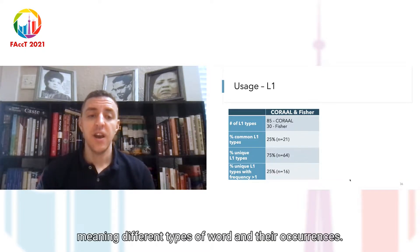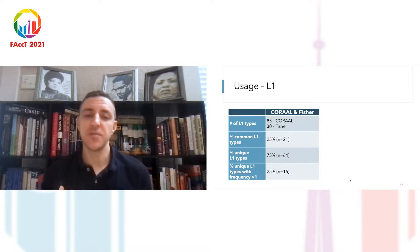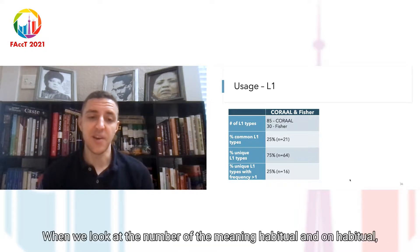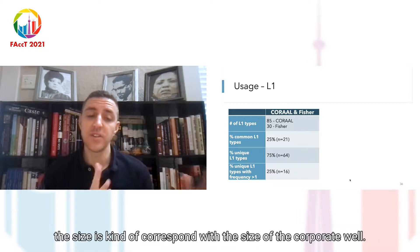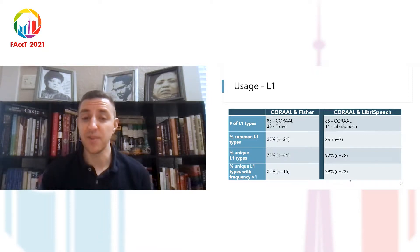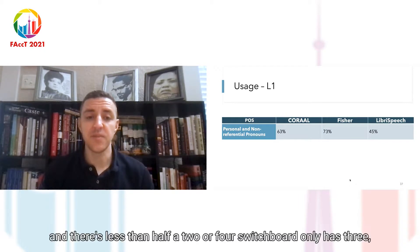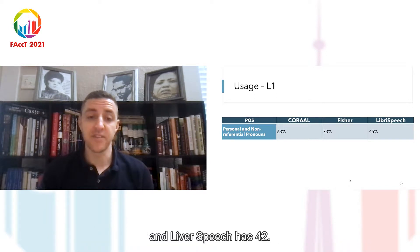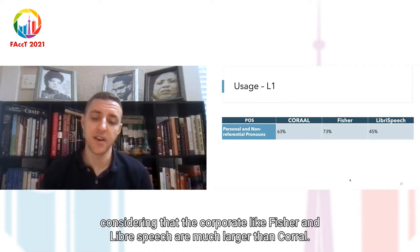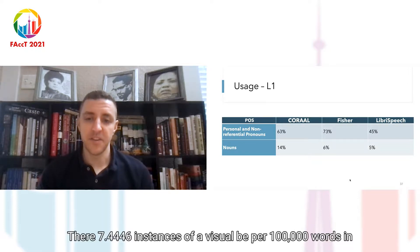Finally, for usage — in terms of L1 for CORAAL and Fisher, the number of L1 types for CORAAL was much higher than Fisher. Word types just means the unique word instances. The number of common L1 types between the two corpora was only 25%, meaning that only 25% of the words one to the left of B in CORAAL appear in Fisher. LibriSpeech is even worse — it only had 11 unique word types, and only 8% of the L1 types were held in common between CORAAL and LibriSpeech. In terms of parts of speech, CORAAL had 63% personal and non-referential pronouns, Fisher had about 73% — so that tracks a bit better — whereas LibriSpeech only had about 45%, a much different part of speech distribution. For nouns: 14% for CORAAL, 6% for Fisher, and 5% for LibriSpeech.